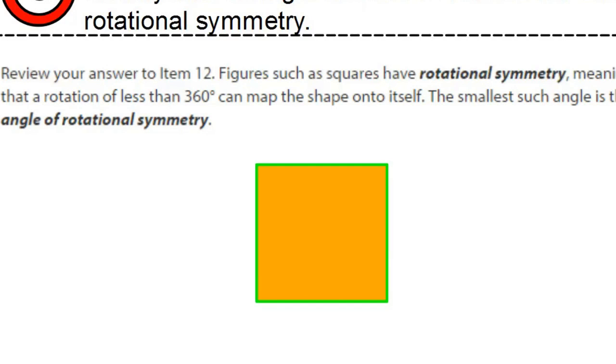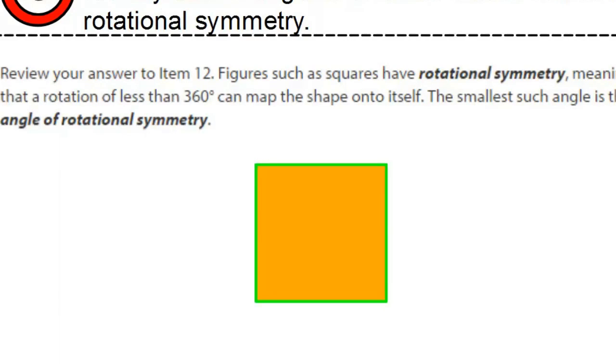Last but not least, let's talk about rotational symmetry. Rotational symmetry is whenever a figure can be rotated such that the figure maps onto itself. The smallest angle that does such a mapping is called the angle of the rotational symmetry.